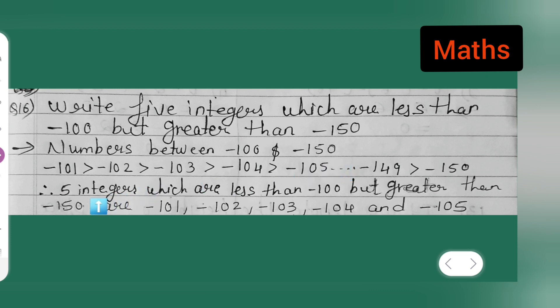Therefore, 5 integers which are less than -100 but greater than -150 are: -101, -102, -103,